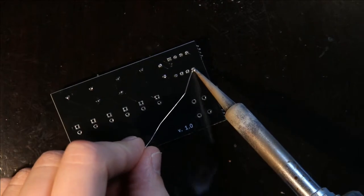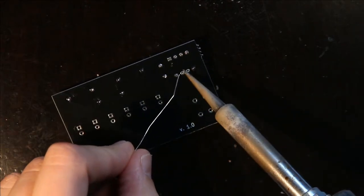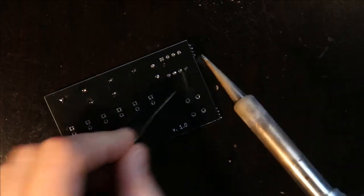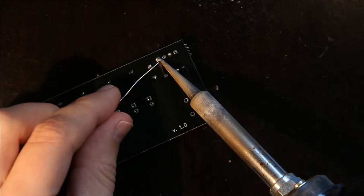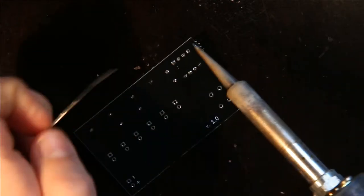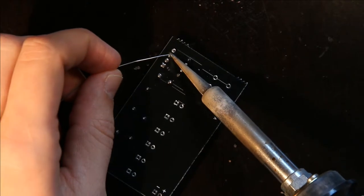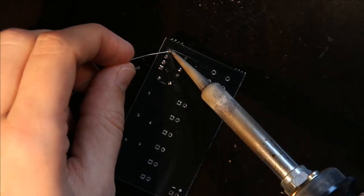The microcontroller is the only component that you can actually damage if you put it in backward. The resistors can't be put in backward. They don't have a polarity. And the capacitor can't be put in backward. But the microcontroller, if you put it in backwards, could break.